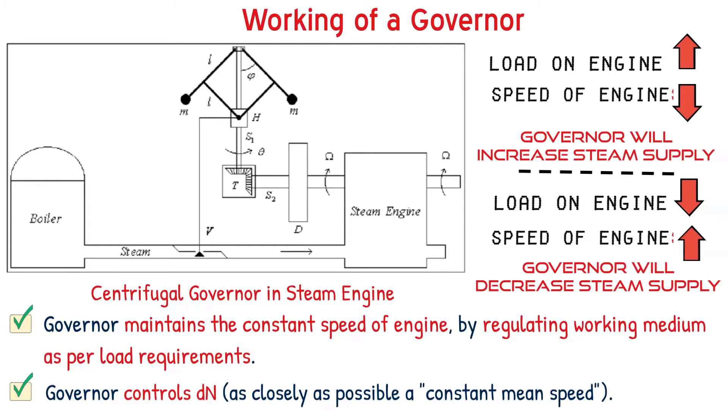And hence, the governor maintains the constant speed of the engine by regulating and controlling the fuel supply as per the load requirements. Governor works intermittently — that means it works only when there is a change in load, and hence a change in engine speed — and comes into picture in order to maintain constant speed.